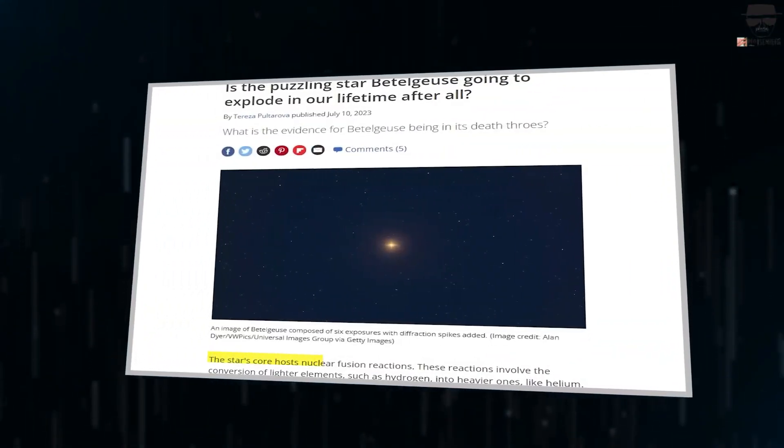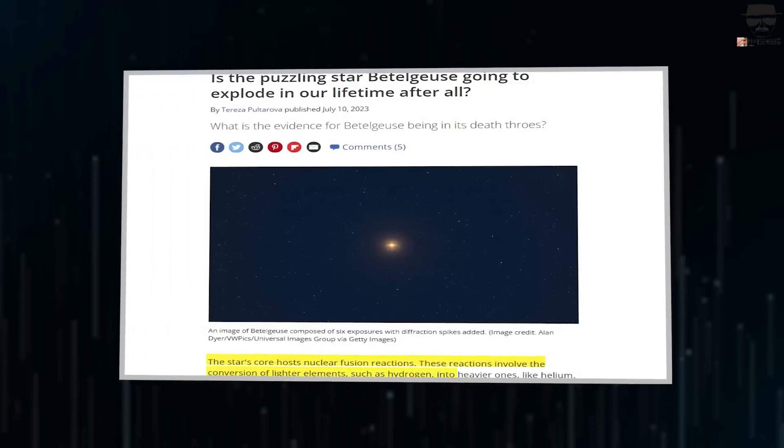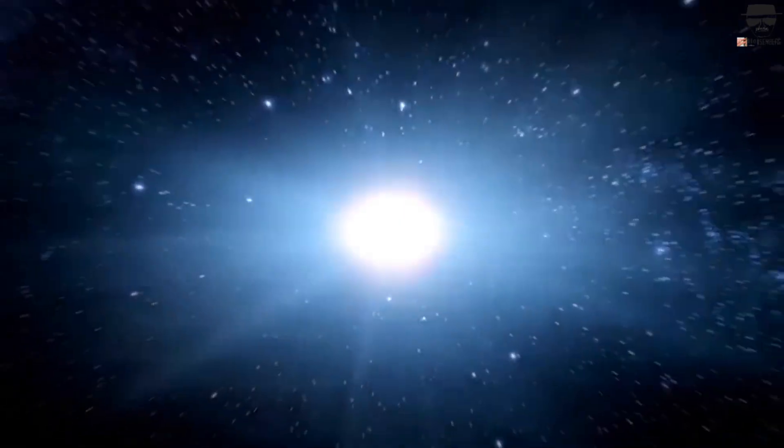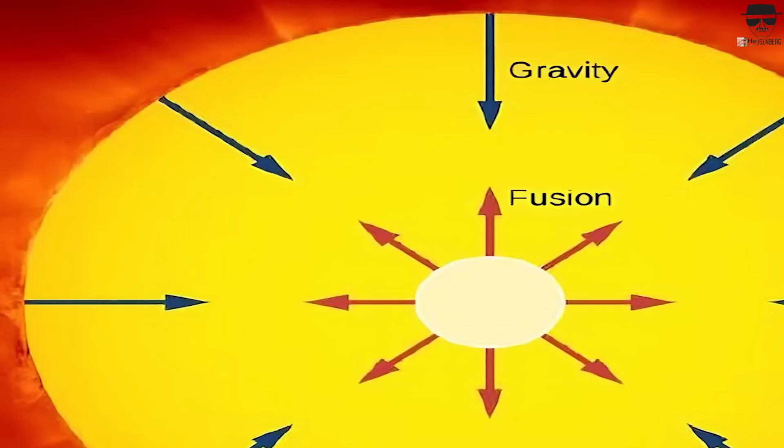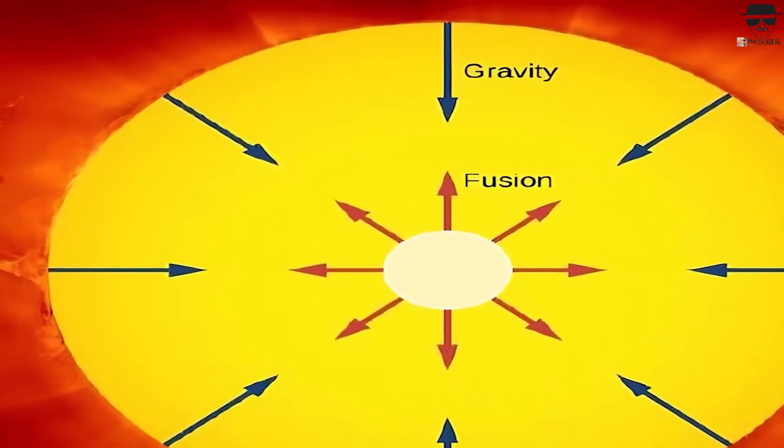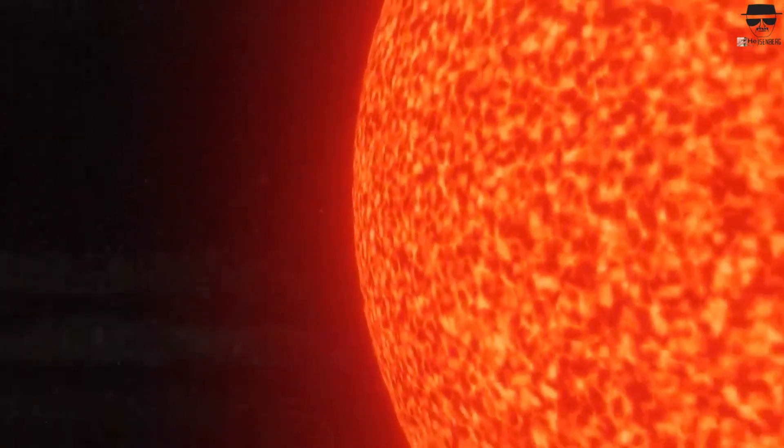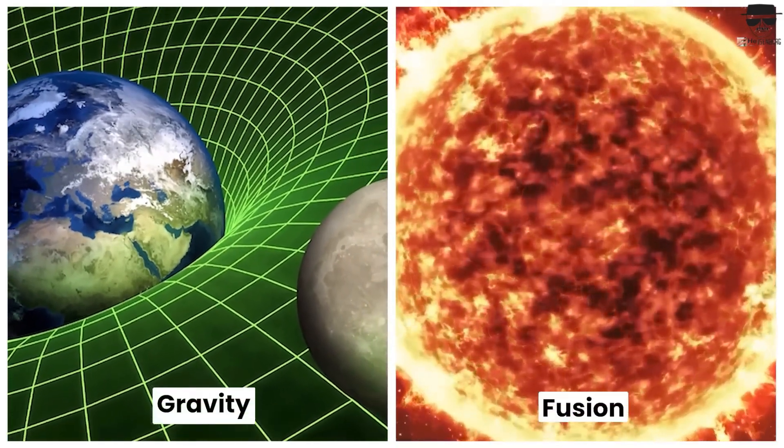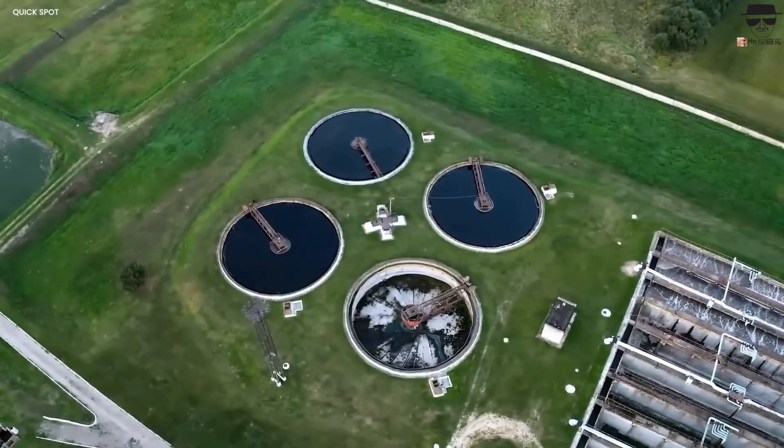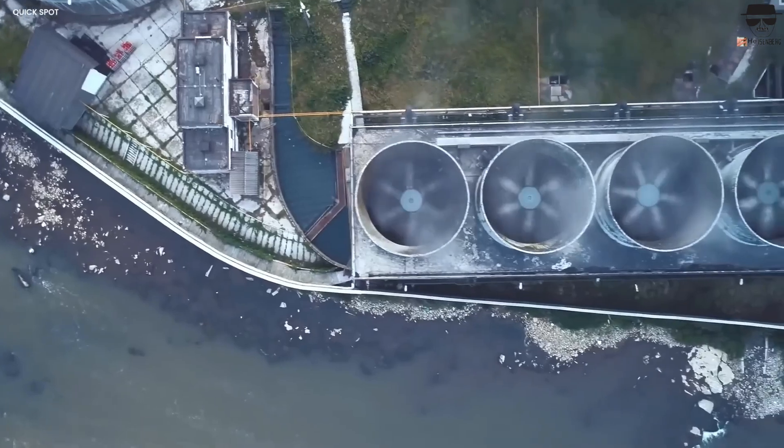People say that the James Webb Space Telescope, JWST, is the most powerful telescope ever made. It has also found planets about the size of Jupiter that are floating in space and not linked to any star. The JWST found about 40 pairs of these objects while it was looking at the Orion Nebula. They are known as Jupiter mass binary objects or jumbos. These things are too small to be stars, but they also don't fit the usual description of a planet because they're not orbiting a parent star. As of now, scientists are still trying to figure out what these strange objects are.